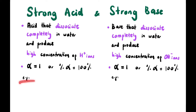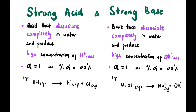Examples: HCl → H⁺ + Cl⁻ — the arrow is one-way, indicating complete dissociation. Similarly, NaOH → Na⁺ + OH⁻, also one-way. For strong acid and strong base, if the concentration of HCl is 0.1 M then the concentration of H⁺ is also 0.1 M.